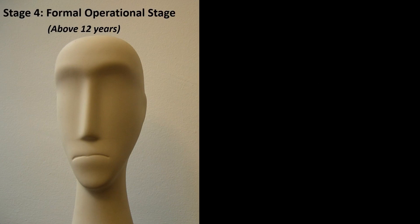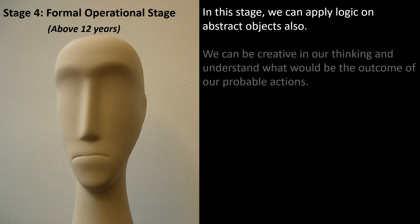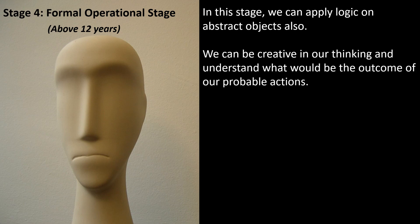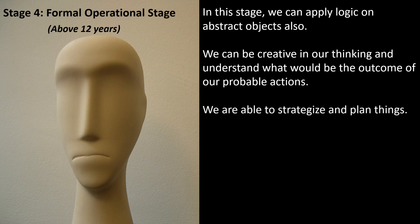The fourth stage of Piaget's theory of cognitive development is called the formal operational stage. As per Piaget, this stage extends from above twelve years of our development. In this stage, we can apply logic on abstract objects also. We can be creative in our thinking and understand what would be the outcome of our probable actions. We are able to strategize and plan things.